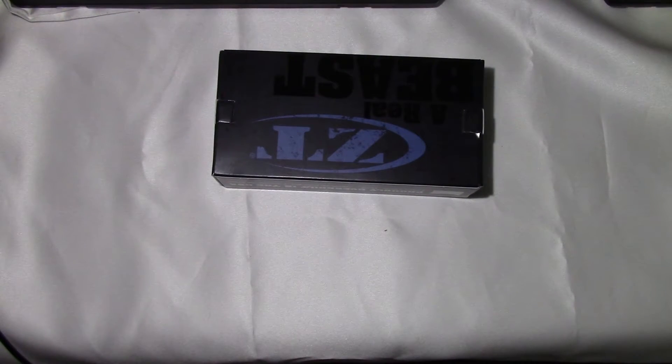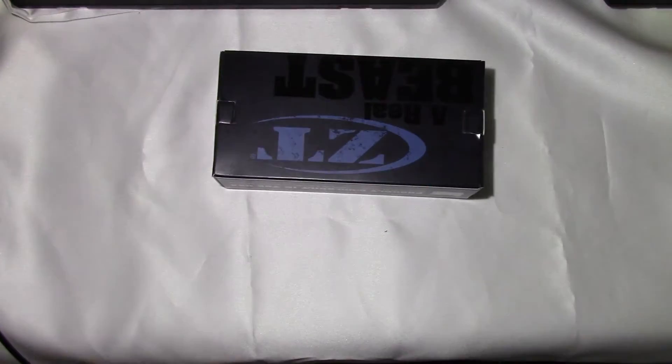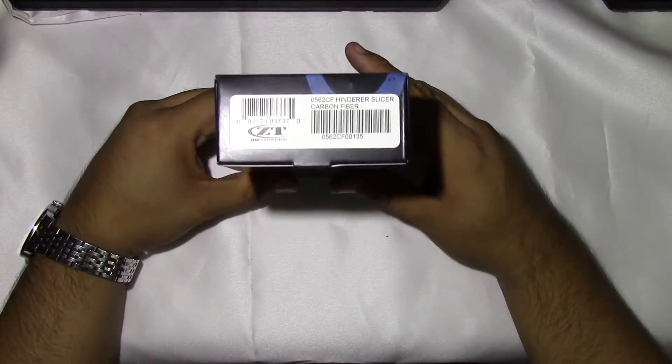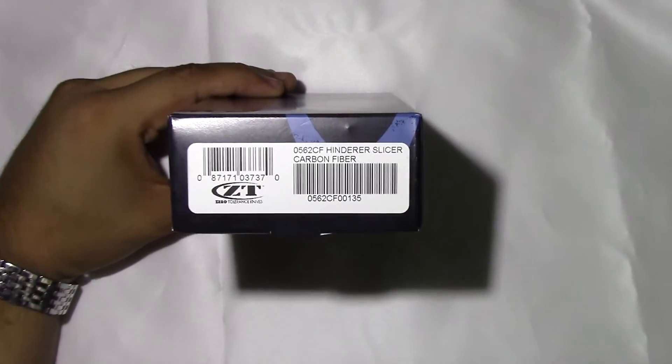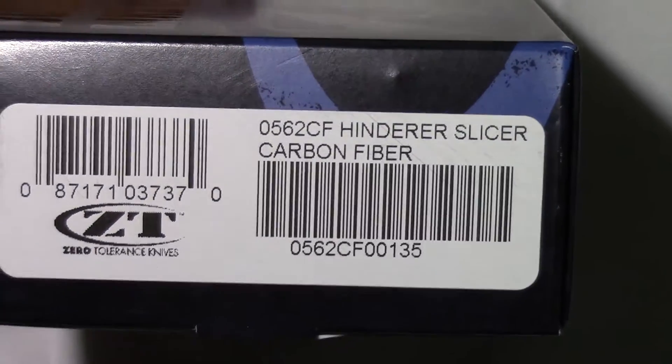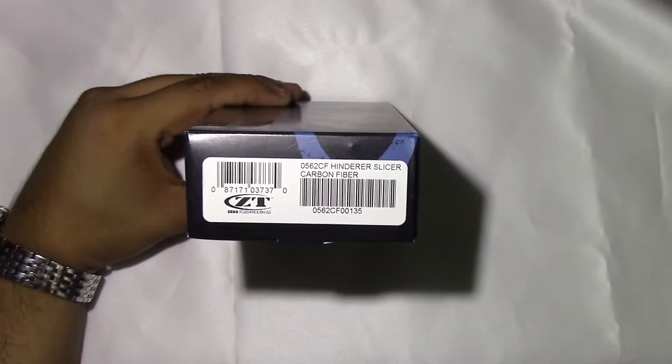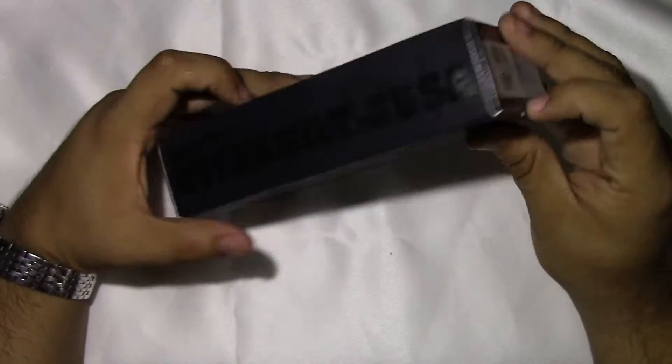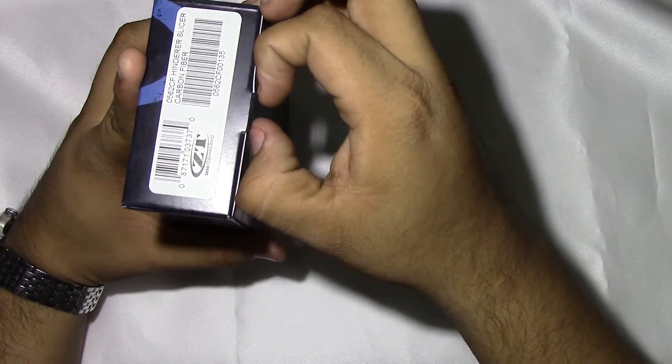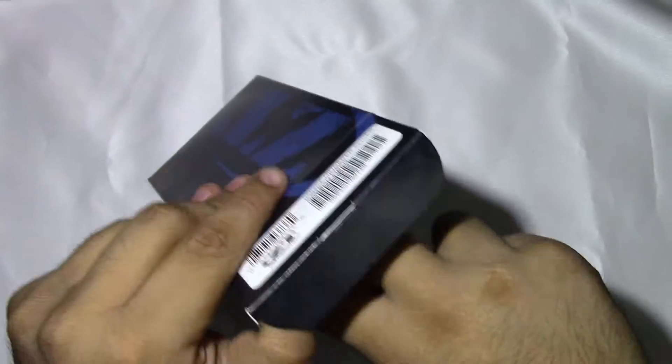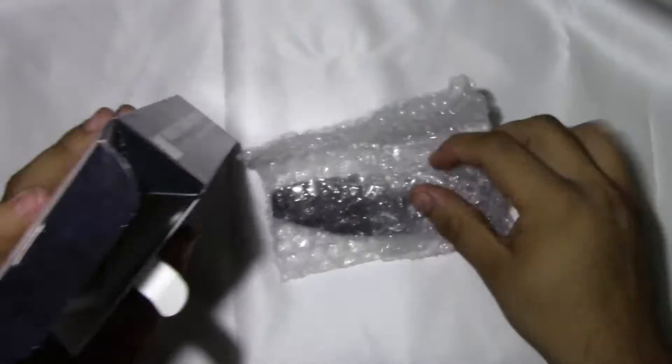Zero Tolerance box and that's pretty much it. Let's open it. And there you guys go. Zero 562 in carbon fiber. Let's go ahead and open it. And I did ask them to please check for centering and to check for cosmetic issues before shipping it to me.